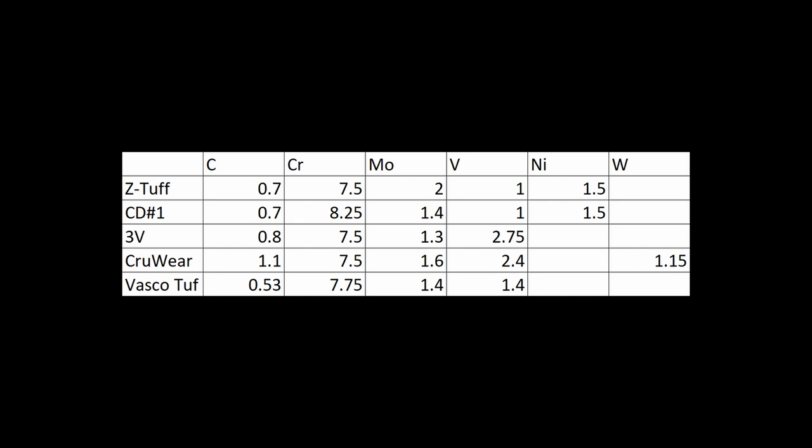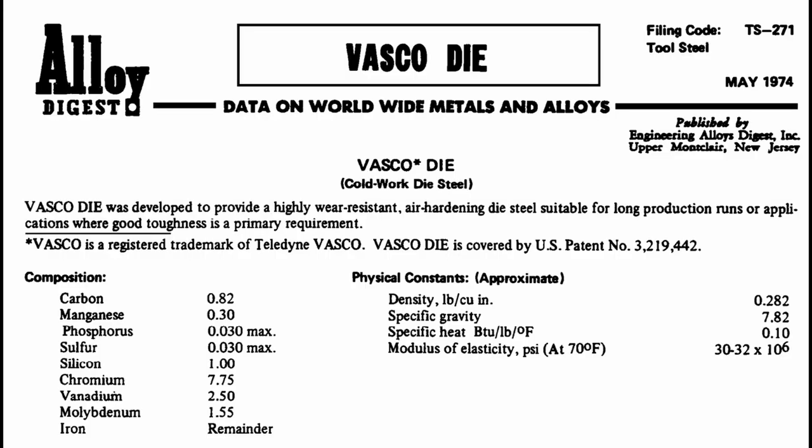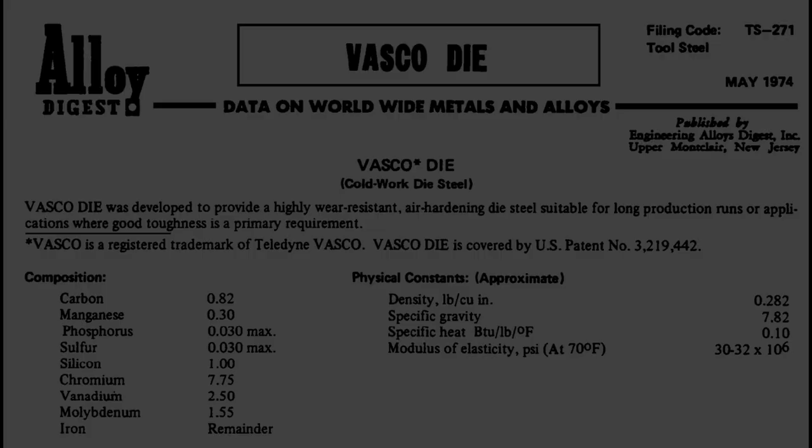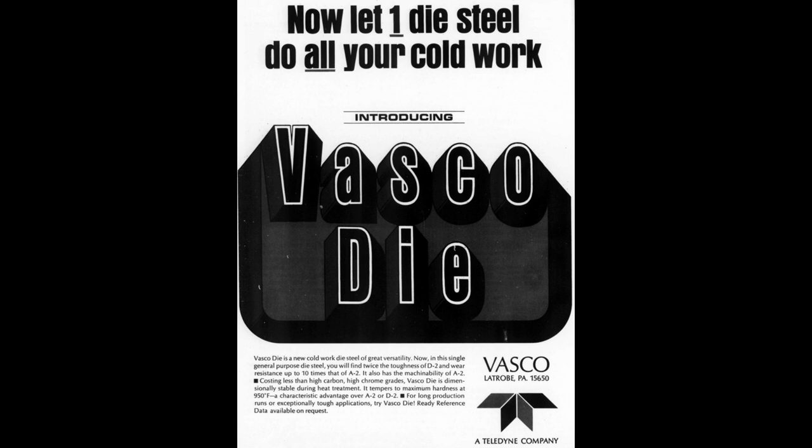Now, both of these steels are a modification of earlier steels that came out in the 60s and early 70s. The first one was called Vasco Die, made by a company called Vasco, stands for Vanadium Alloy Steel Company in Latrobe, Pennsylvania, and it was made as a die steel. It was advertised as being as tough as A2 and as wear-resistant as D2, because those were and are very common die steels.